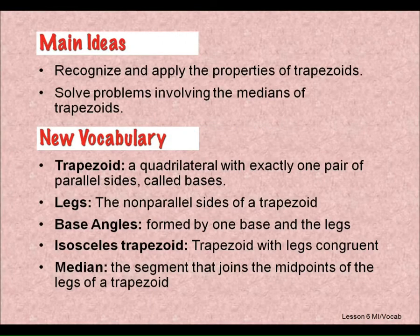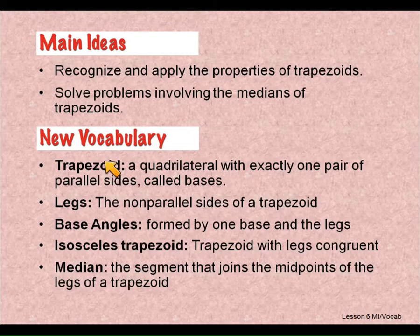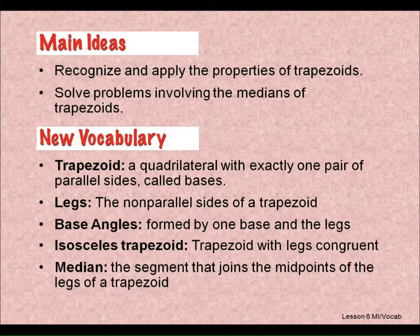This is lesson 6-6 on trapezoids. Now, this vocabulary you will see on the test, because a trapezoid has a few more vocab terms than what a square, rectangle, or rhombus does.